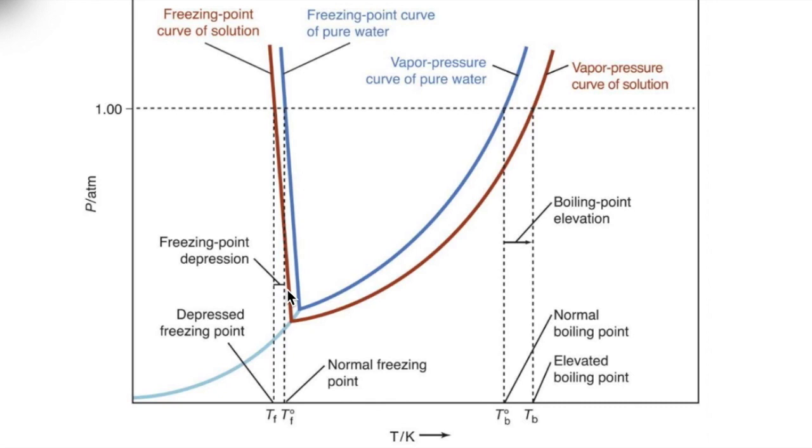Because of the lower vapor pressure of the solution, this results in a shift where the solid liquid equilibrium line intersects with the one atmosphere line, which corresponds to the freezing point of the substance. As a result, the red line here is to the left of the blue line, which means a lower freezing point.